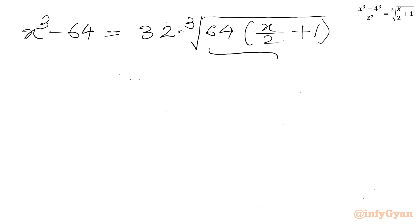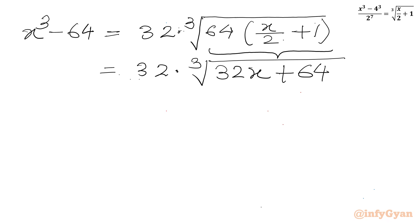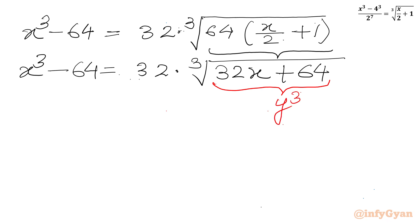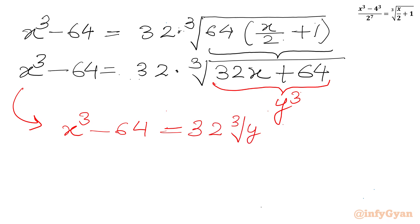Now I will simplify this radical part. 32 times the cube root of 64 times (x over 2) will give us 32x plus 64. And the LHS is x cubed minus 64. Now I will introduce our substitution. Let's say this radicand equals y cubed. So I can write our equation as x cubed minus 64 equal to 32 times the cube root of y cubed. The cube root and cube cancel out, giving us x cubed minus 64 equal to 32y.